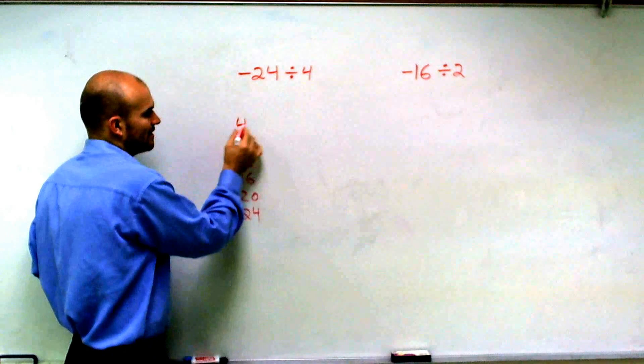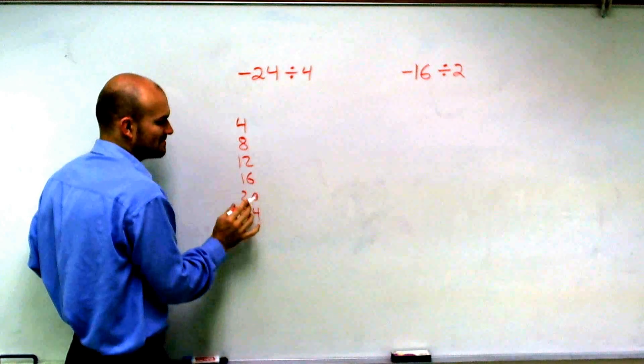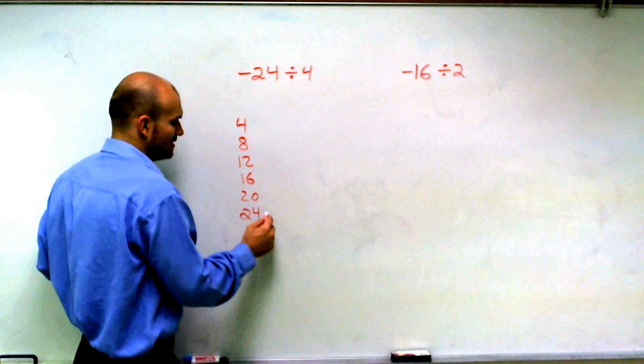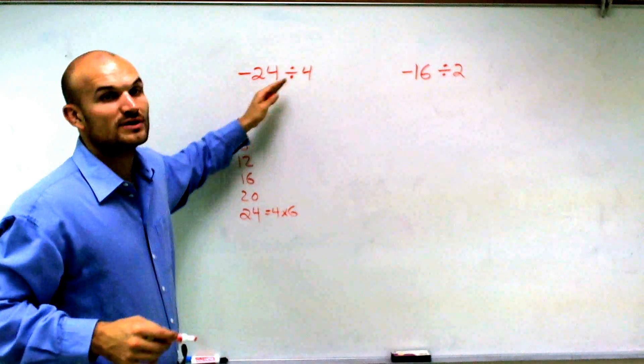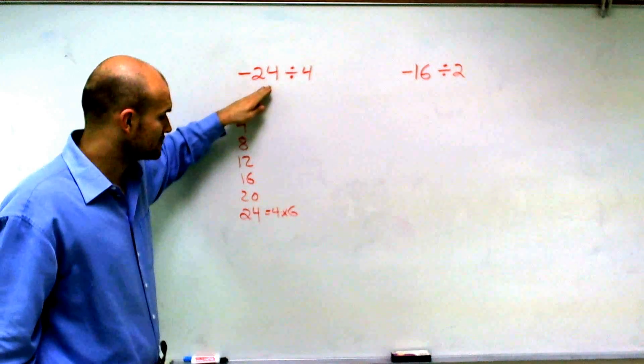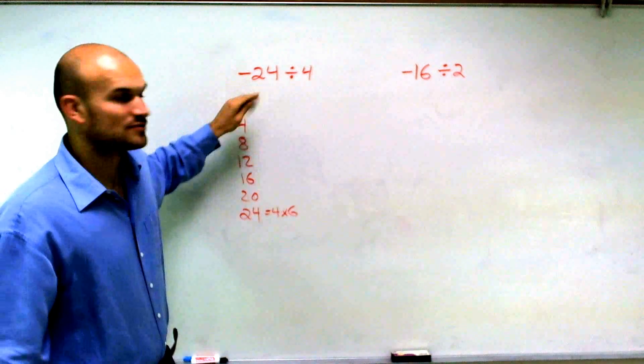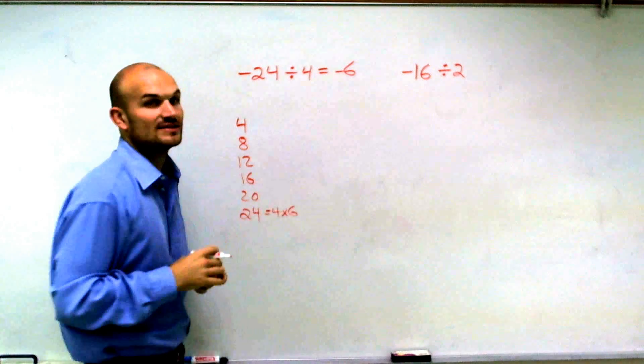But what I notice is, this is 4 times 1, 4 times 2, 4 times 3, 4 times 4, 4 times 5, and 4 times 6 equals 24. So when I say negative 24 divided by 4, how many times does 4 go into negative 24? Well, it goes in there 6 times. But since that's a negative 24, we're going to say it goes in there negative 6 times.